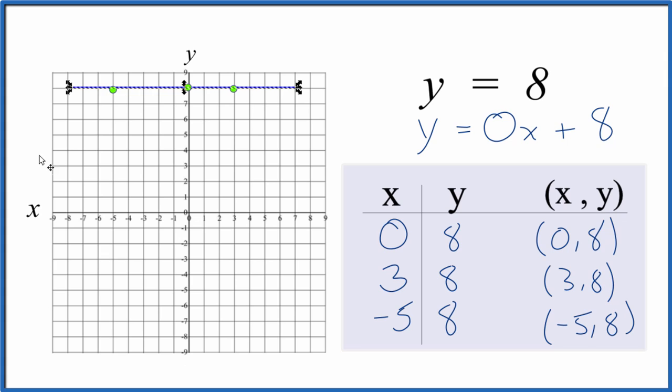Let's put a line through that, and then we can put arrows to show that it goes to infinity. And that's the graph for y equals 8. Any value for x will result in a value of 8 for y.